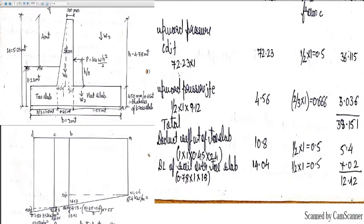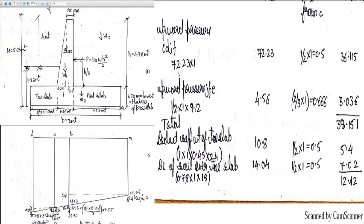The self-weight of the toe slab is calculated for a rectangular section of 1 m × 0.45 m in concrete: 1 × 0.45 × 24 = 10.8 kN. This acts at 0.5 m from point C, giving a moment of 10.8 × 0.5 = 5.4 kN·m downward.